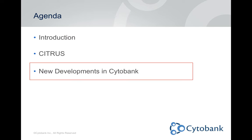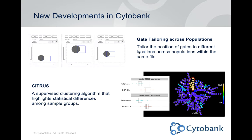Now on to some other new developments inside Cytobank. We recently addressed a long-standing customer request for tailoring across populations. Previously, if you were looking for a readout in a functional marker from several different populations, you'd have to draw several gates on the same plot. Now we've changed it to a more traditional gating mode where you can move a gate around and tailor it per parent population — putting the gate in one place for B cells, a different place for T cells, and another for monocytes, without needing to make three separate gates.